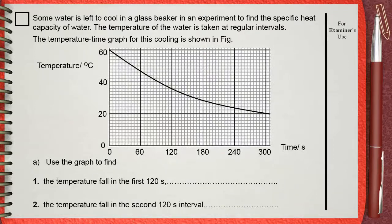Some water is left to cool in a glass beaker in an experiment to find the specific heat capacity of water. The temperature of water is taken at regular intervals. The temperature time graph for the cooling is shown in figure.